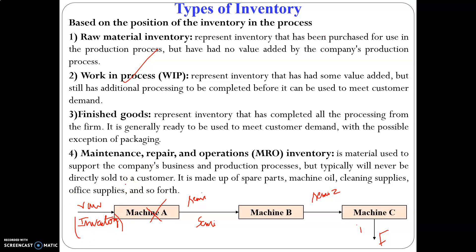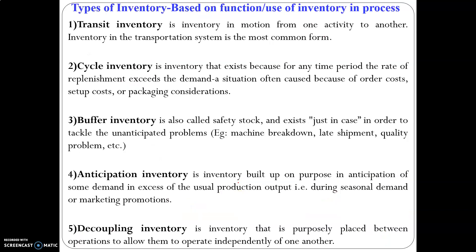Just because a particular tool or tool accessory like a fixture or jig gets repaired, we cannot stop production. So we have to maintain an excess quantity of those items. For example, in case of a machine, a single point cutting tool might break down. So I have to have an excess single point cutting tool in hand — those will be termed as MRO inventory.